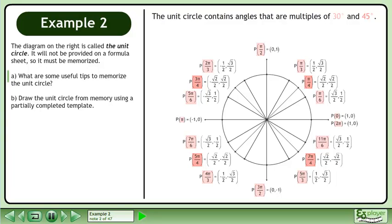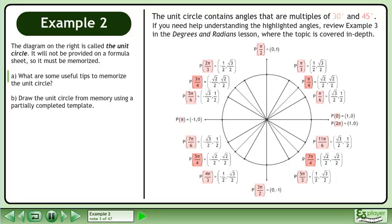The Unit Circle contains angles that are multiples of 30 degrees and 45 degrees. If you need help understanding the highlighted angles, review Example 3 in the Degrees and Radians lesson where the topic is covered in depth.